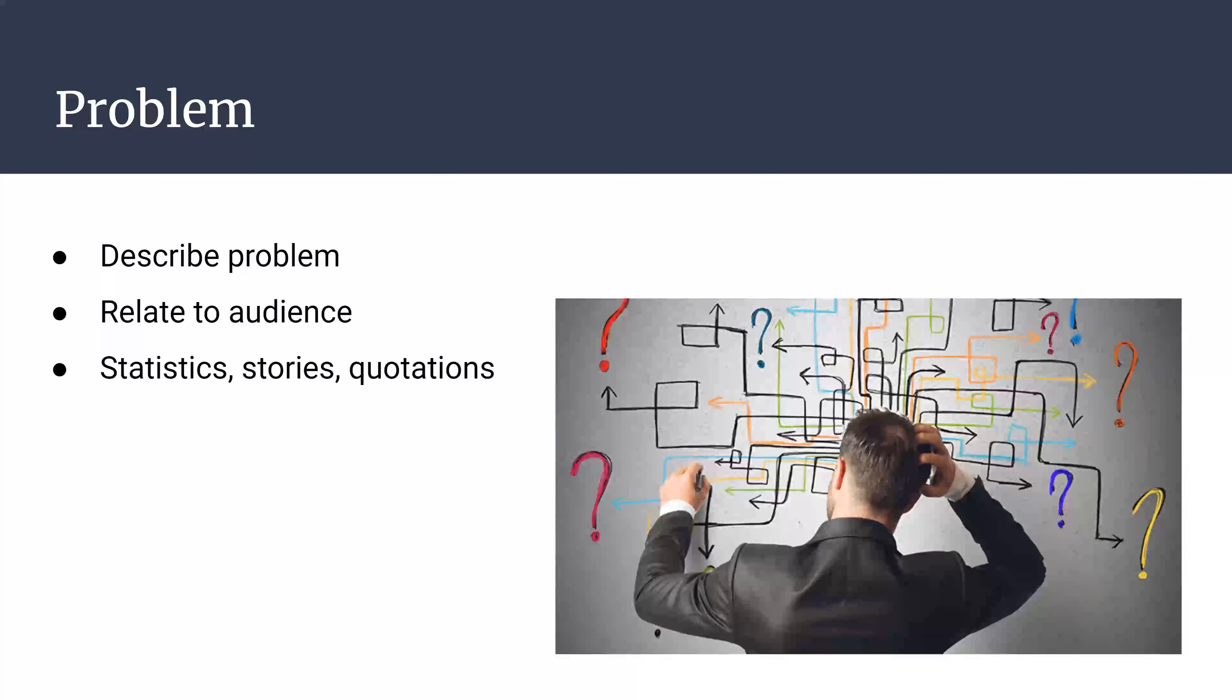So, you're going to describe your problem. This is where we're taking that information we started in our introduction, where we named the problem, and now we're describing it for the audience. We're providing additional statistics, more facts, or stories, possibly quotations from different people. And you're helping your audience understand the problem a little better and why it's so important and should be important to them.